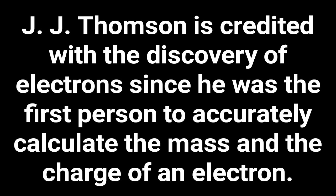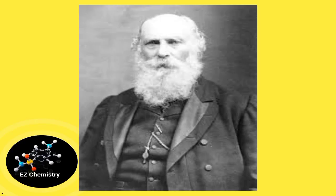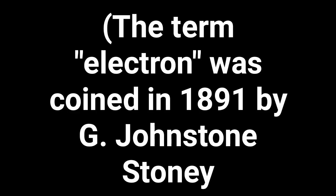J.J. Thomson is credited with the discovery of electrons, since he was the first person to accurately calculate the mass and the charge of an electron. The term electron was coined in 1891 by Johnston Stoney.